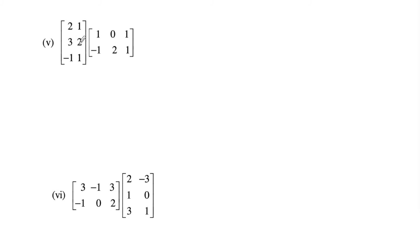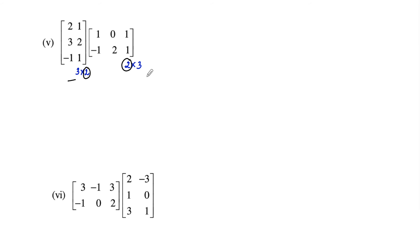Let's do the fifth one. The first matrix [2, 1; 3, 2; −1, 1] has 3 rows and 2 columns. The second matrix [1, 0, 1; −1, 2, 1] has 2 rows and 3 columns. The number of columns in the first matrix equals the number of rows in the second, so multiplication is possible and the order of the product matrix will be 3 by 3.